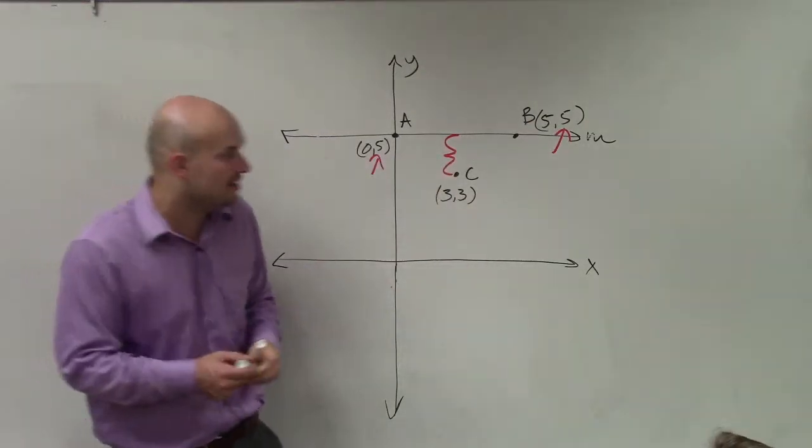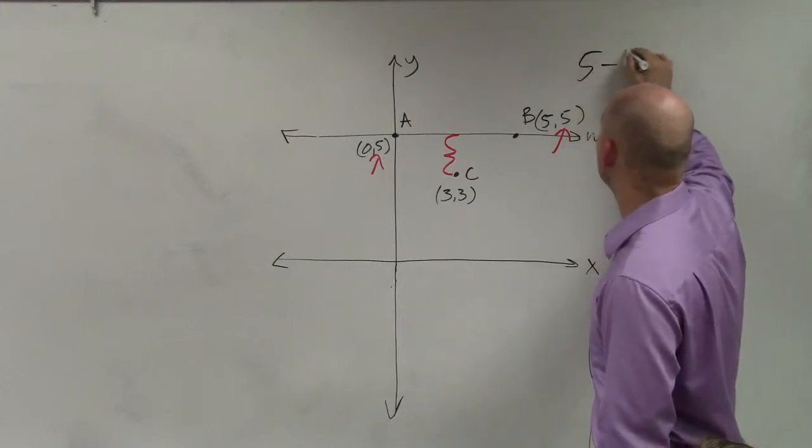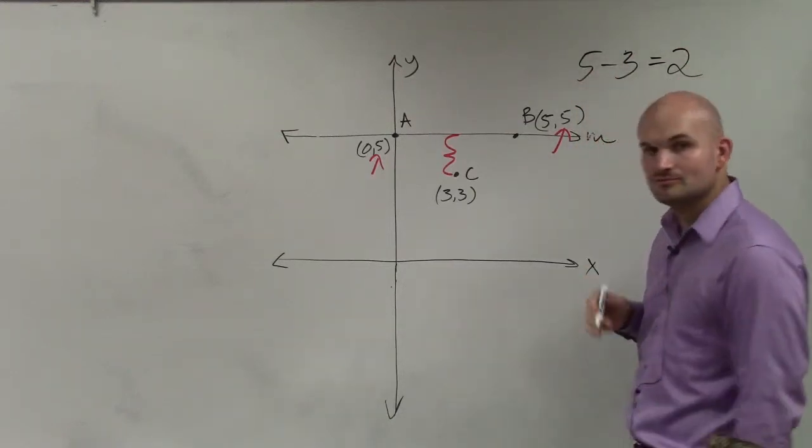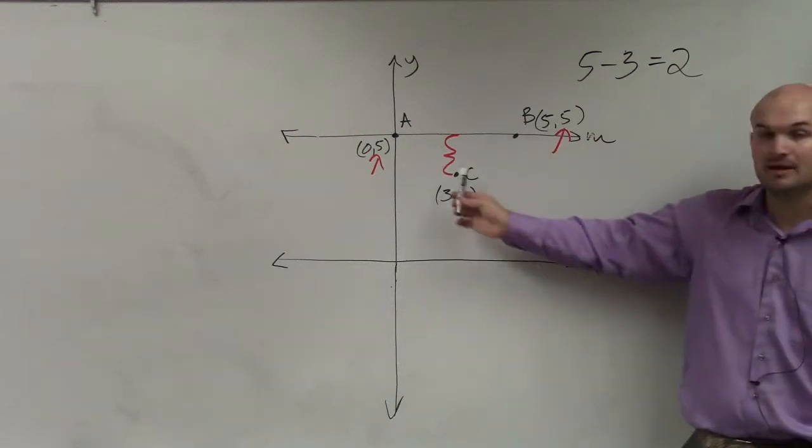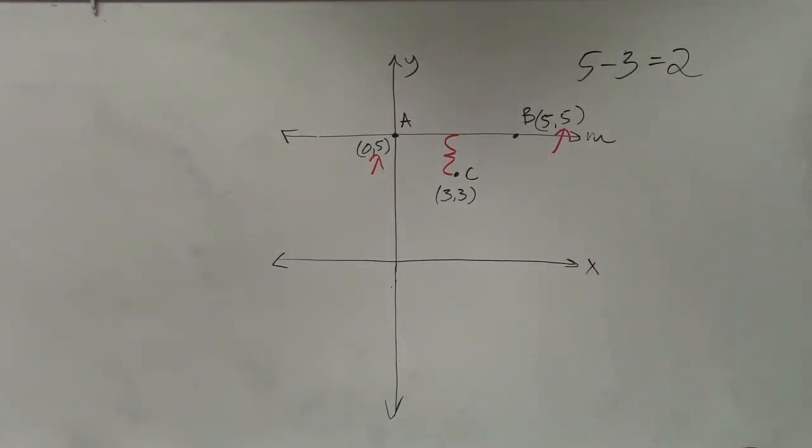So to find the distance between them, basically all we need to do is just take 5 minus 3, and we get 2. So the distance between line M and point C is 2. That's all it took.